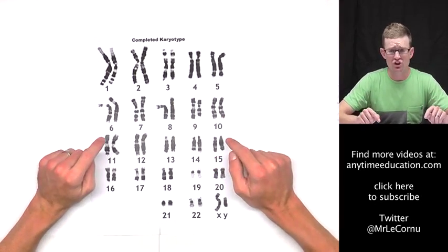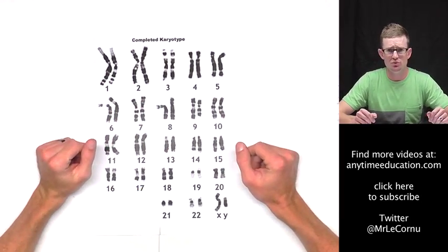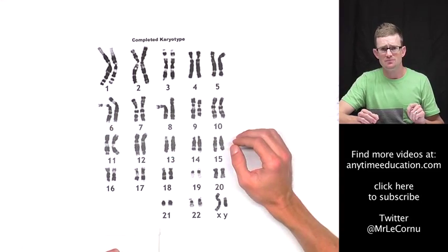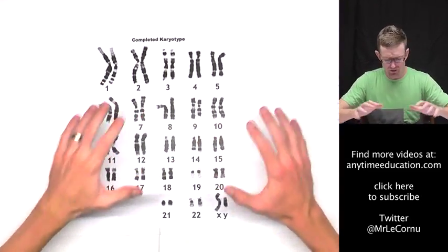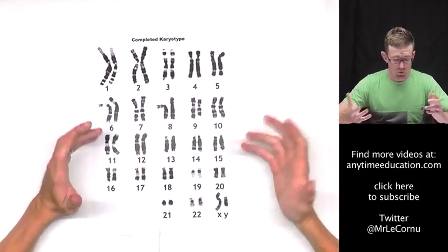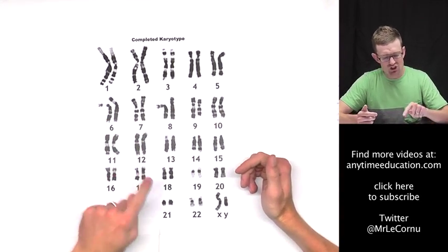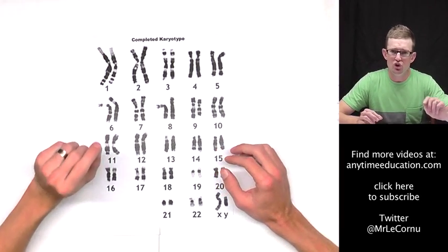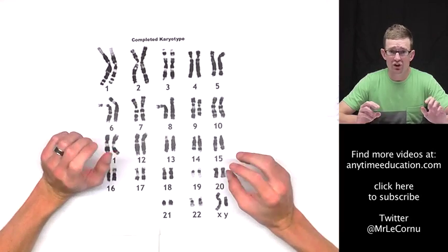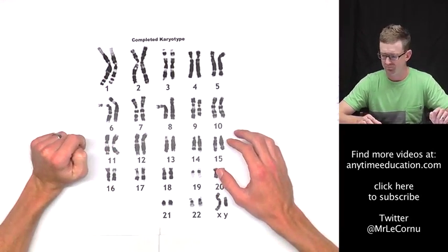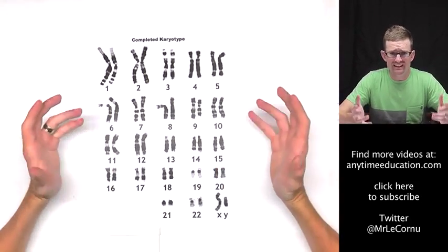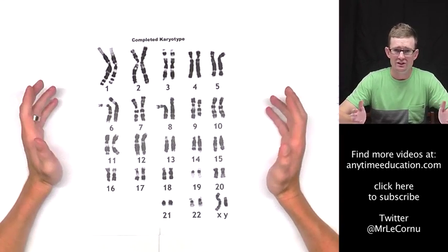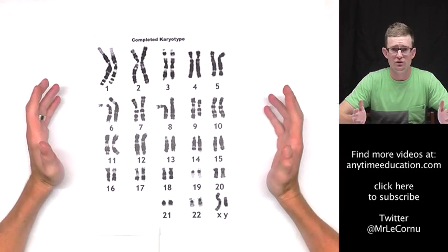The Human Genome Project has been responsible for finding the base sequence of all 23 human chromosomes, so we know the base sequence of all of them. The challenge now is to work out what all of this information means and where each gene is located. Most of a chromosome is actually made up of non-coding regions of DNA, and the actual genes only account for a small portion. Working out what this non-coding DNA is for is where we're at in biological discovery — exciting times.